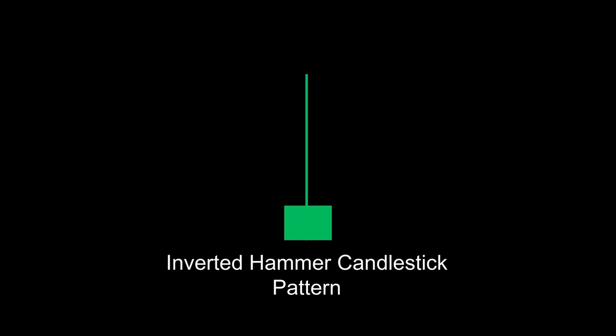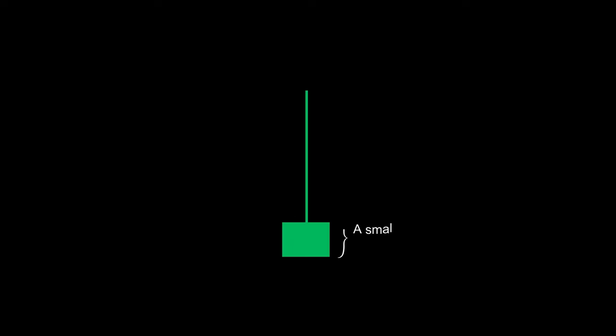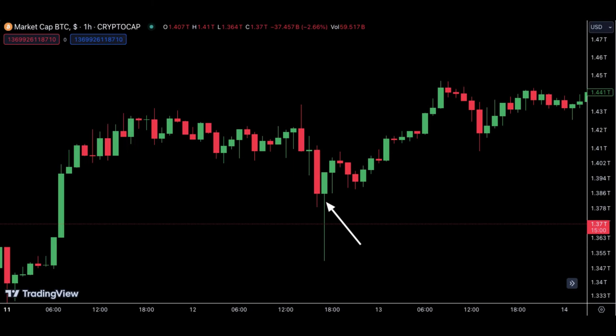We also have the inverted hammer — it is the same as the hammer, but when found at the support of a trend it signals a potential reversal from bearish to bullish. An inverted hammer candlestick with a greater success rate has a small body closer to the lows, a long upper shadow that is at least twice longer than its body length, and little to no lower shadow.